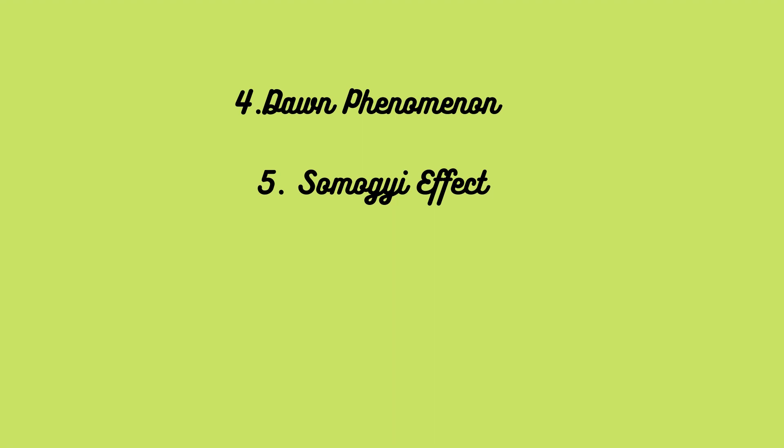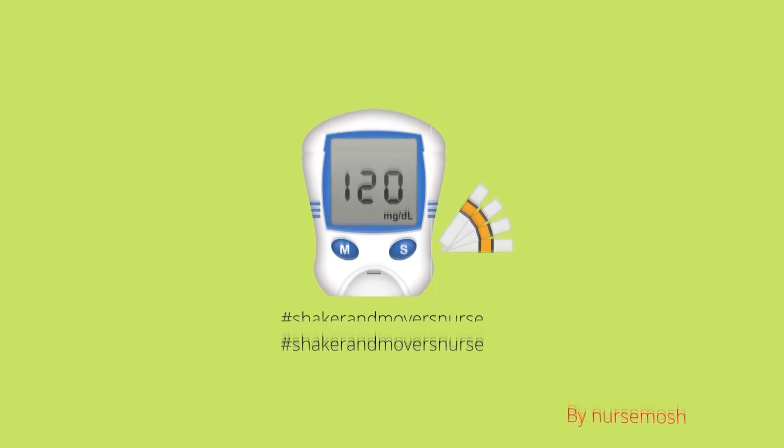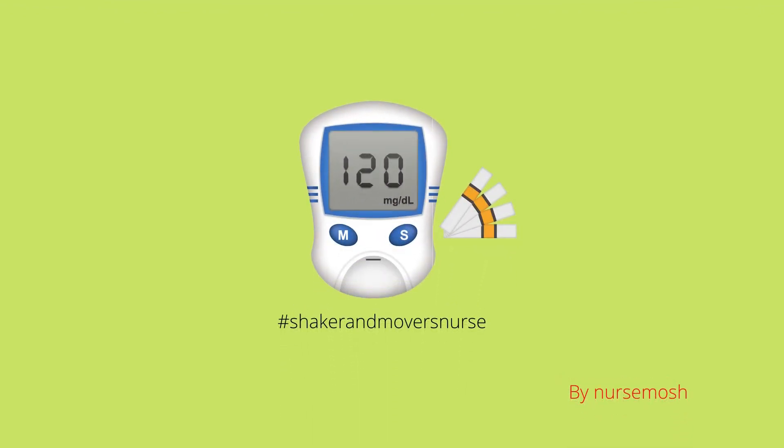The Somogyi effect is a drop in blood glucose in the early hours of the morning. The body releases hormones such as cortisol and growth hormone to increase blood glucose, but in diabetics the body cannot cope with the increase and the sugar will be elevated. This normally happens between 2 a.m. and 3 a.m. Treatment is to eat a bedtime snack as close to bedtime as possible, and insulin can also be given. Thank you for watching — please like, share, and subscribe.